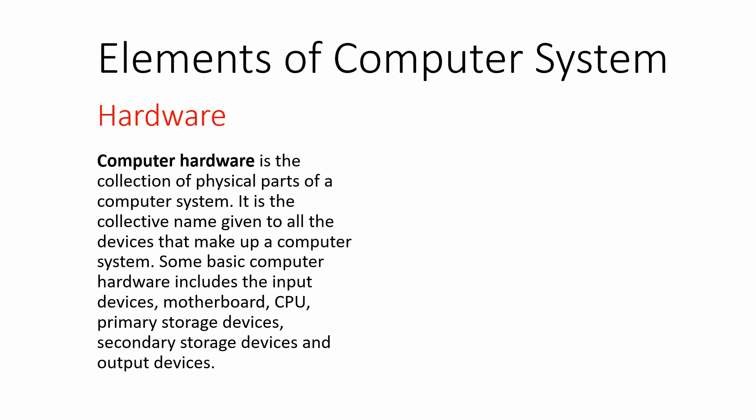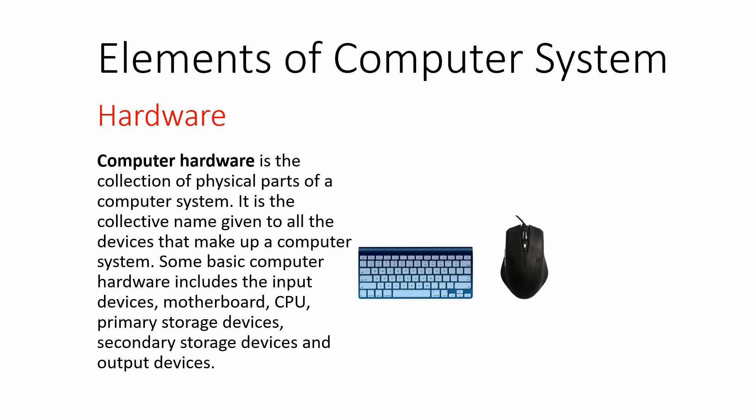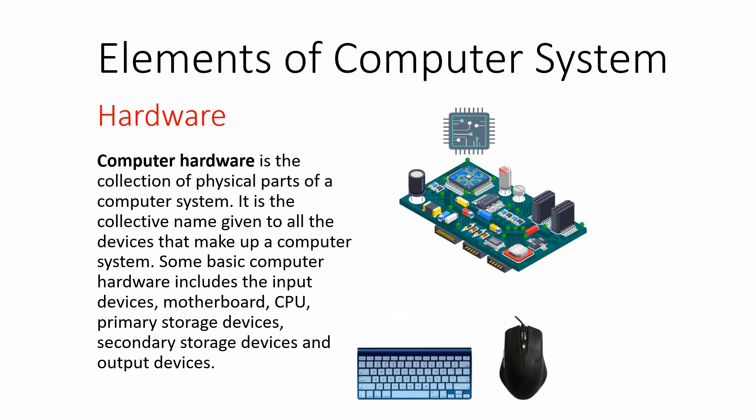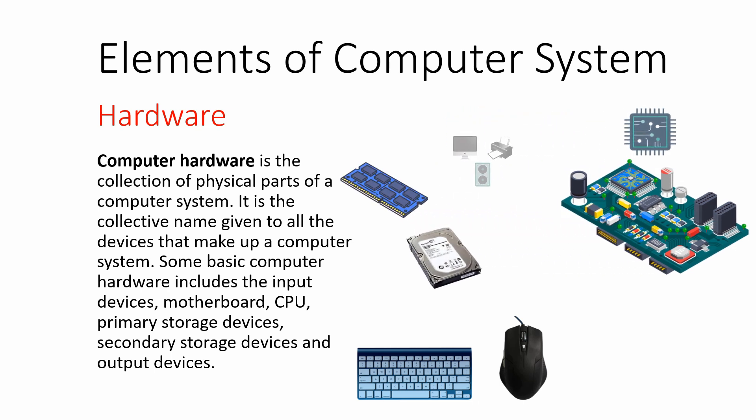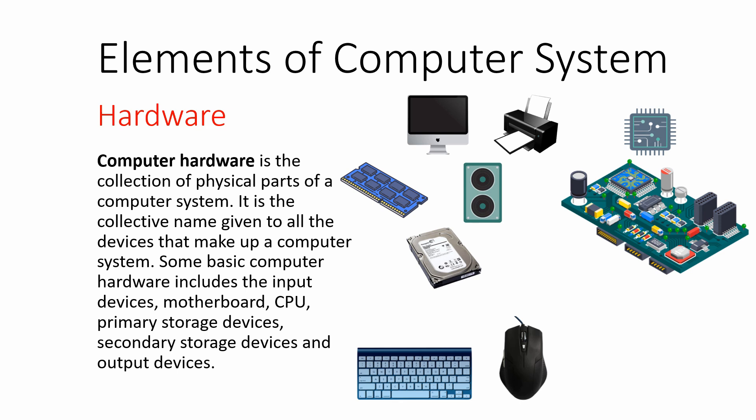Let's start with the first element of a computer, that is computer hardware. Computer hardware is all the physical parts of the computer system. It is the collective name given to all the devices that make up the computer system. Some of the basic hardware includes input units such as keyboard and mouse, the motherboard and CPU which is inside the CPU case, primary and secondary storage devices, all the output devices, and all the wires available inside the computer system. So all the physical or solid parts of a computer are considered as computer hardware.